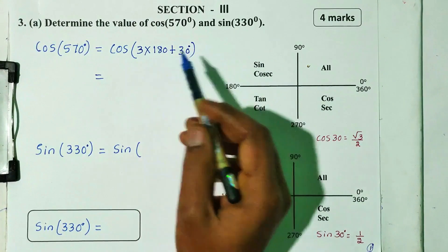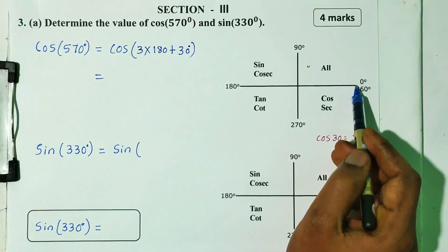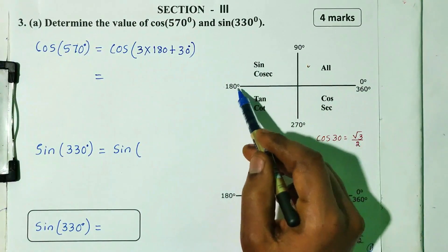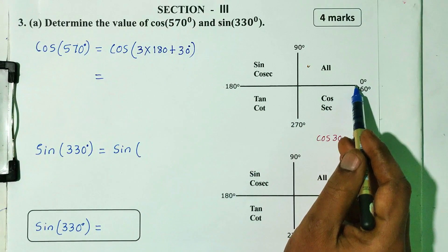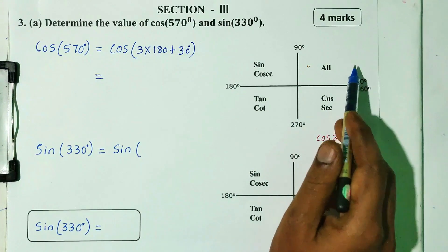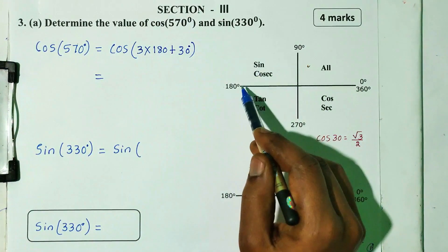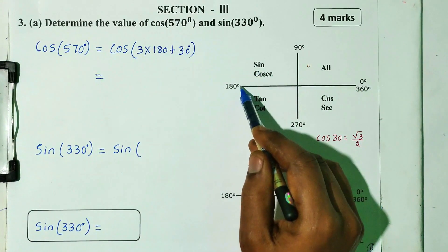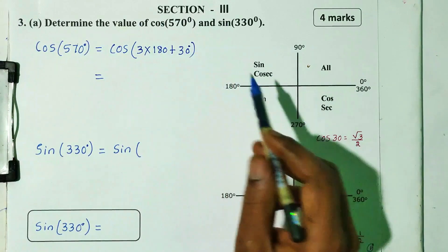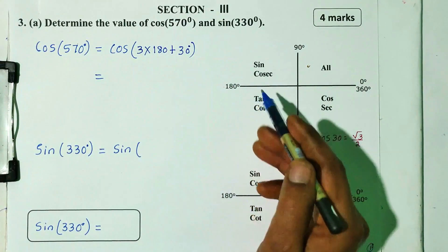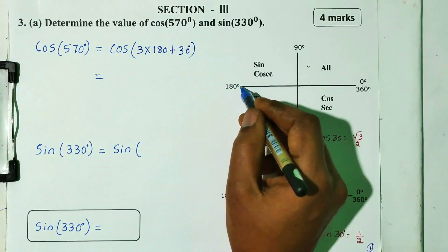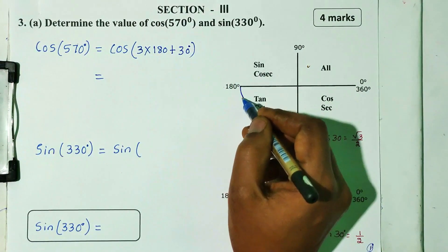180. So, 180 into 3. First 180, here is 180, here is 180. So, here is 180 plus 30. Next, we add 3. What is the answer? Plus, and then the quadrants.